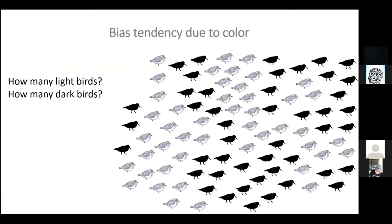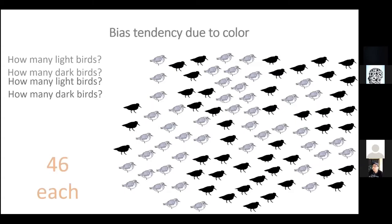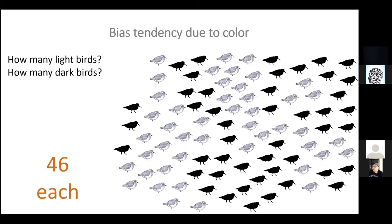Here's another mental estimate: how many light colored birds are here, and how many dark colored birds? This is thinking about the tendency for color to affect your estimates. There are the same number of dark and light birds. Think about this when you're in the field with light colored and dark colored birds and make that mental note.